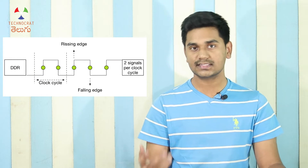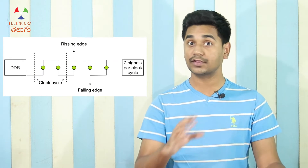In electronic circuits, the second type is sequential circuits. Sequential circuits have a clock. The clock provides synchronicity in the circuit so that all parts change at the same time.